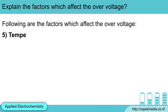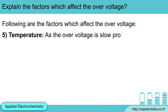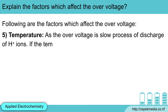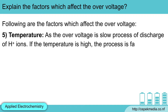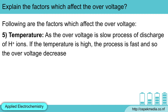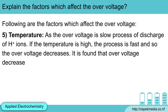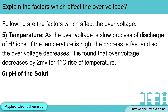Fifth, temperature. As the overvoltage is a slow process of discharge of hydrogen ions, if the temperature is high, the process is fast and so the overvoltage decreases. It is found that overvoltage decreases by 2 mV for 1 degree Celsius rise in temperature.